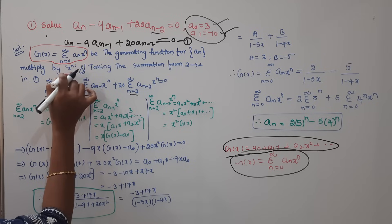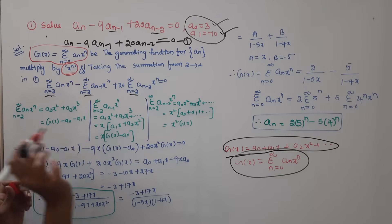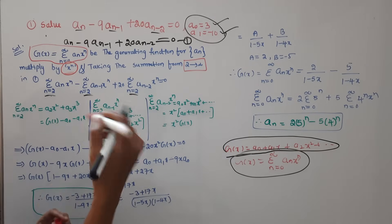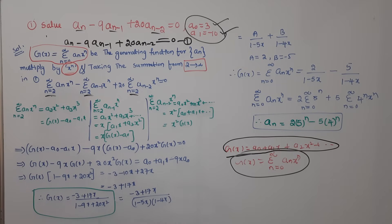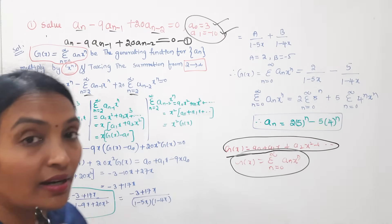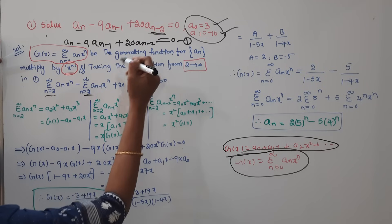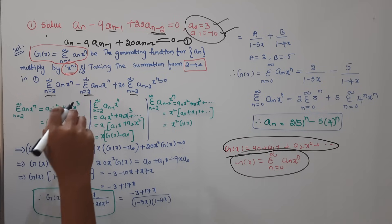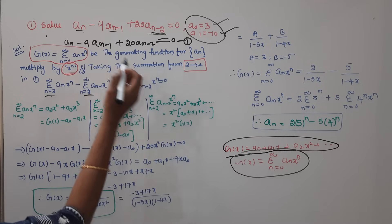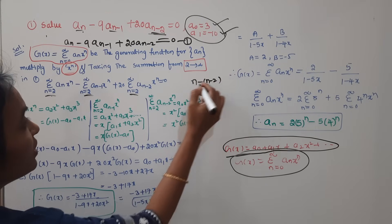Multiply each term by x to the power n, then take the summation from 2 to infinite. The lowest subscript goes with the lowest index and the highest subscript with the highest — summation from n equals 2 to infinite.